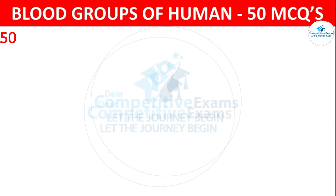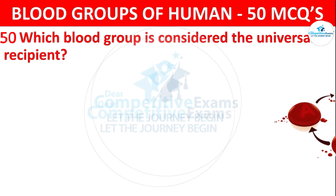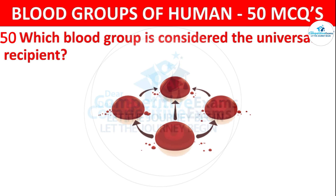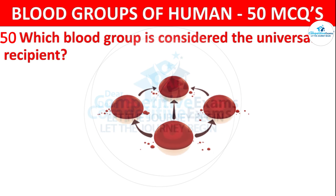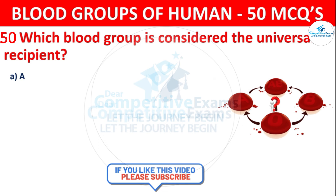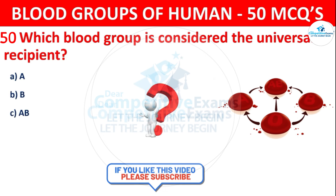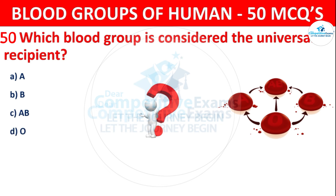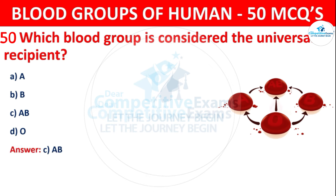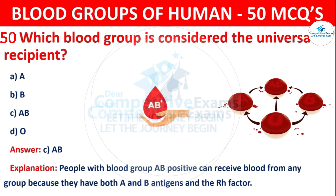Question 50: Which blood group is considered the universal recipient? The correct answer is C, AB. People with blood group AB positive can receive blood from any group because they have both A and B antigens and the RH factor.